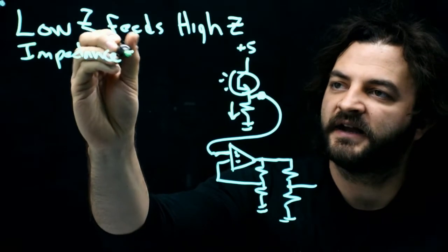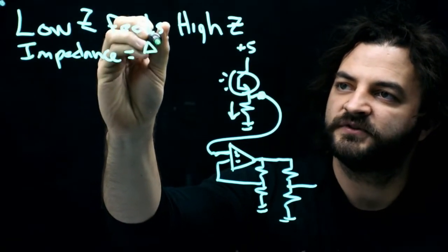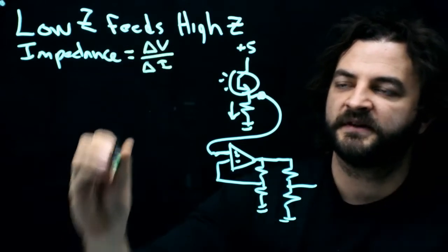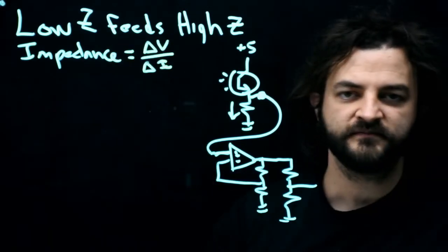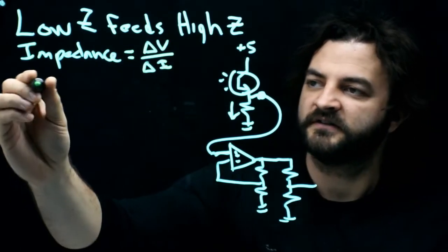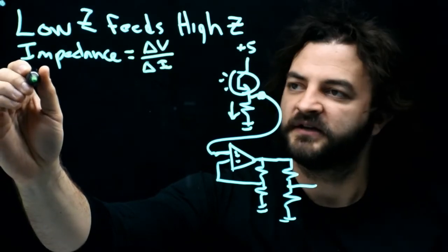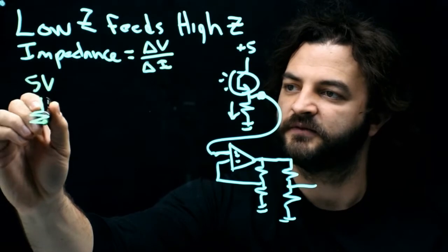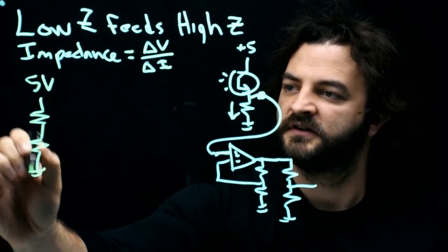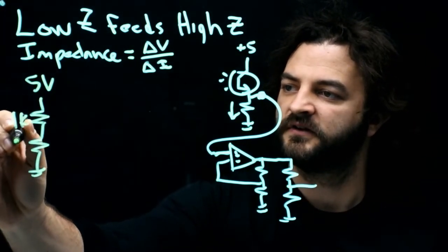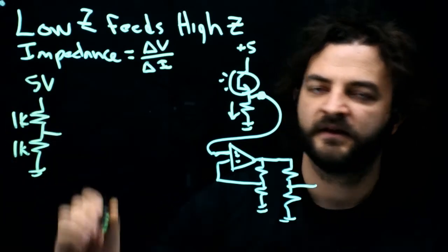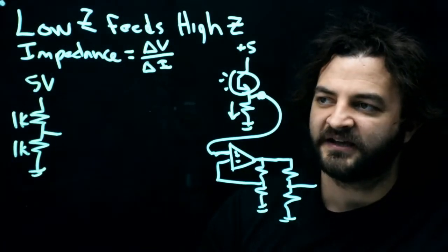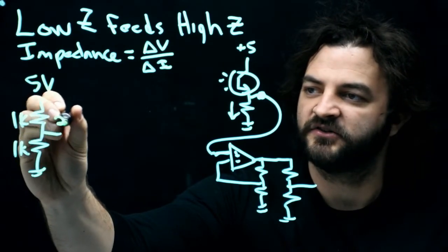So impedance is defined as what is the change in voltage as we change something's output current. For instance, I might try to make 2.5 volts from a 5 volt source, so I will build a voltage divider with 1k resistors. Doesn't really matter, well, I'll say it doesn't really matter that I use 1k. As long as they're equal, I know I should get 2.5 volts.